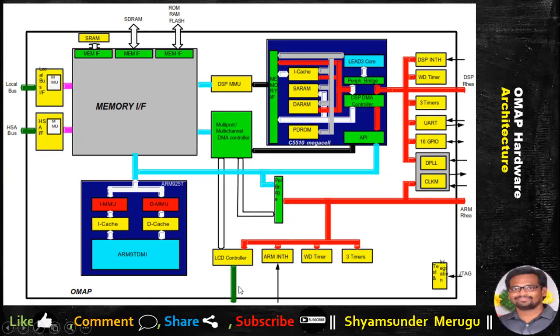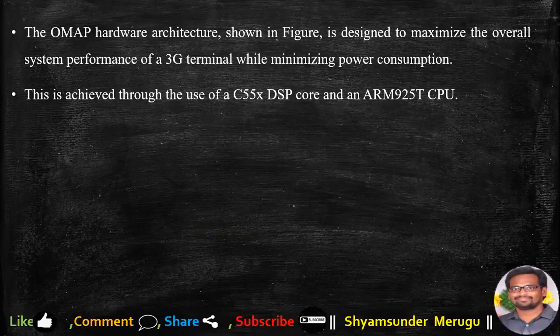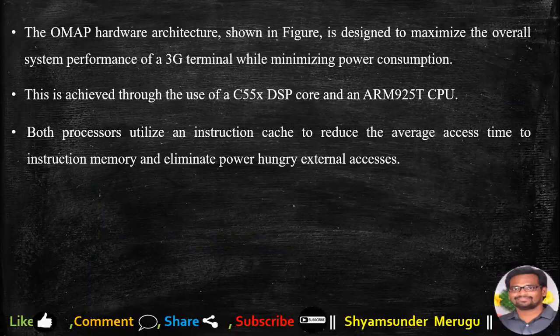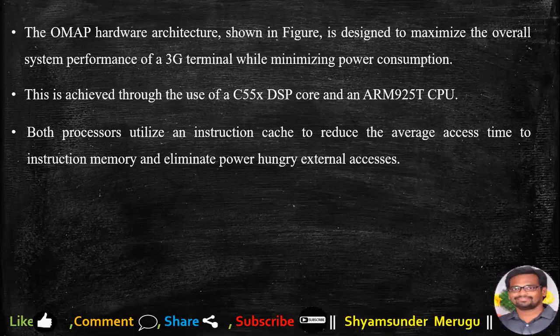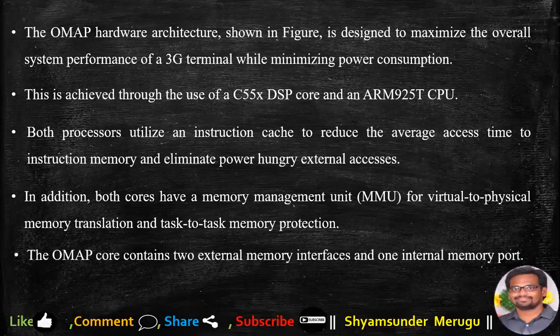These are the block names given in the hardware architecture of the OMAP. Now let us see how this OMAP hardware architecture works. The OMAP hardware architecture is designed to maximize the overall system performance of a 3G terminal while minimizing power consumption. This is achieved through the use of a C55X DSP core and ARM 925T CPU. Both processors utilize an instruction cache to reduce average access time to instruction memory and eliminate power-hungry external accesses. In addition, both cores have a memory management unit for virtual to physical memory translation and task-to-task memory protection. The OMAP core contains two external memory interfaces and one internal memory port.